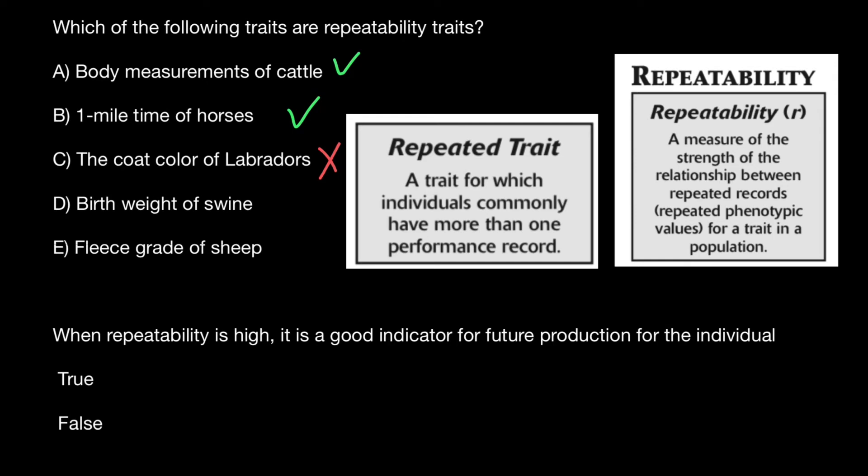Variant D: birth weight of swine. Also, we can take this only once — we cannot take it every month. So it's not a repeatable trait. And variant E: fleece grade of sheep. This is a repeatable trait, so we can take it multiple times.